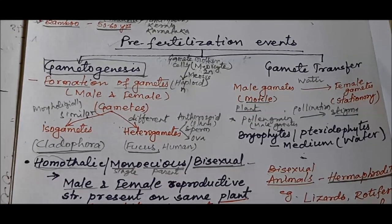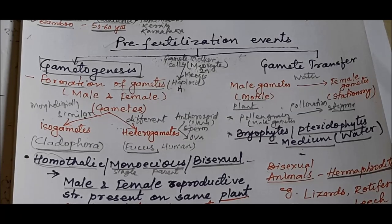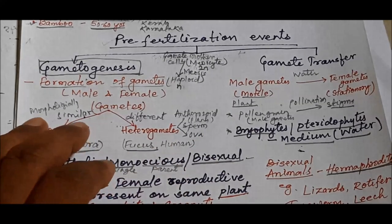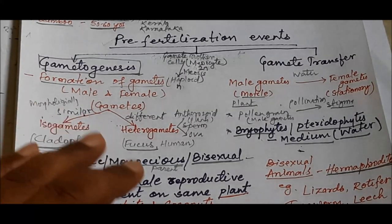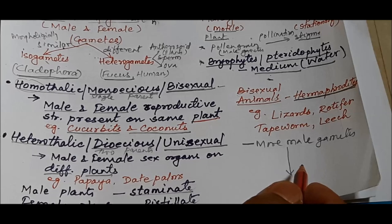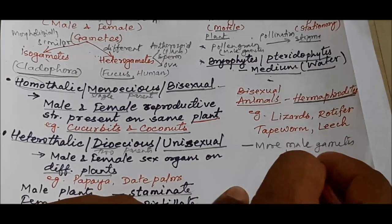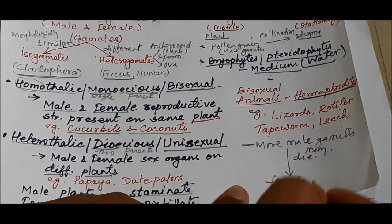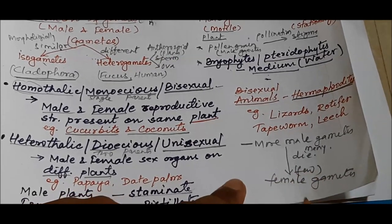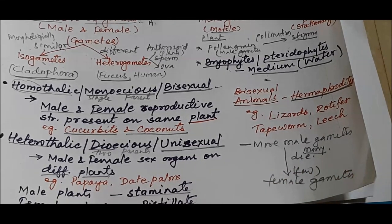In bryophytes and pteridophytes, water is the medium for male gamete transfer, which is why they are called amphibians of the plant kingdom. A large number of male gametes are produced because many fail to reach female gametes. To compensate for this loss, thousands of male gametes are produced so that enough survive to reach and fuse with female gametes.